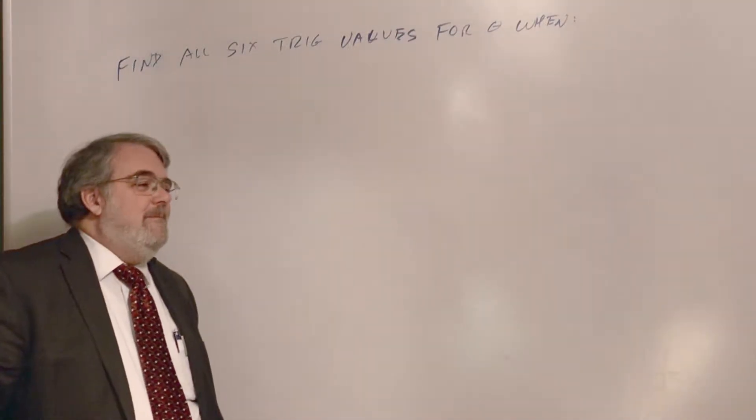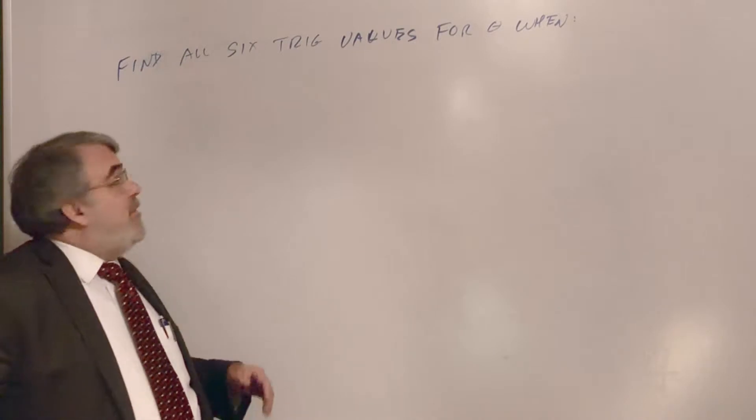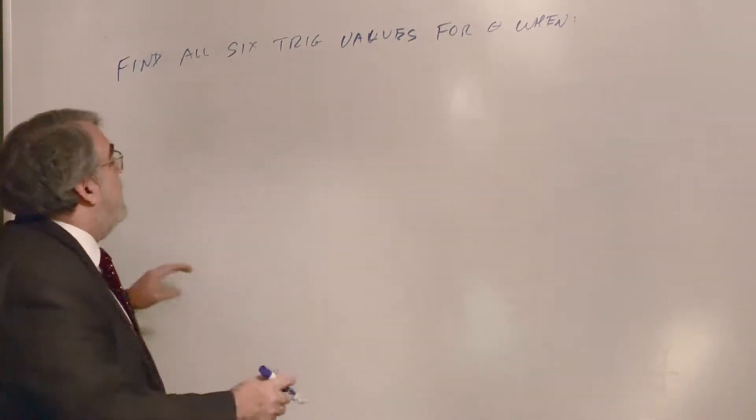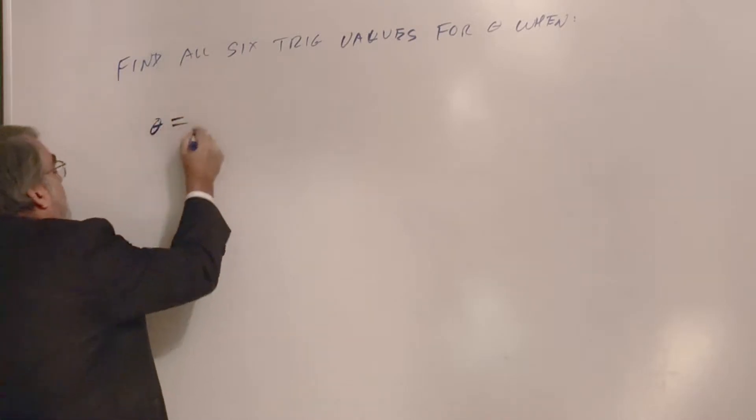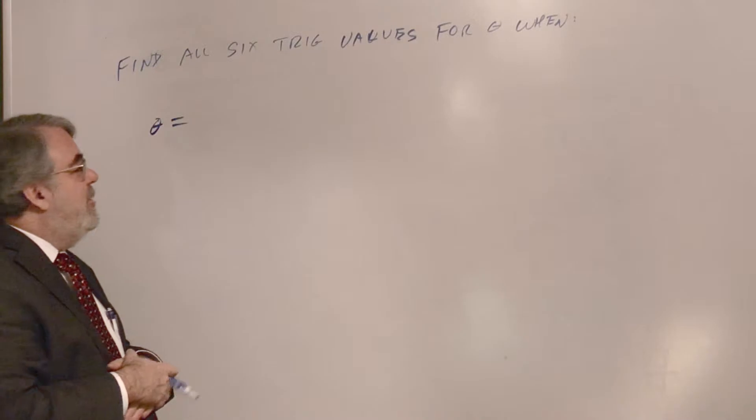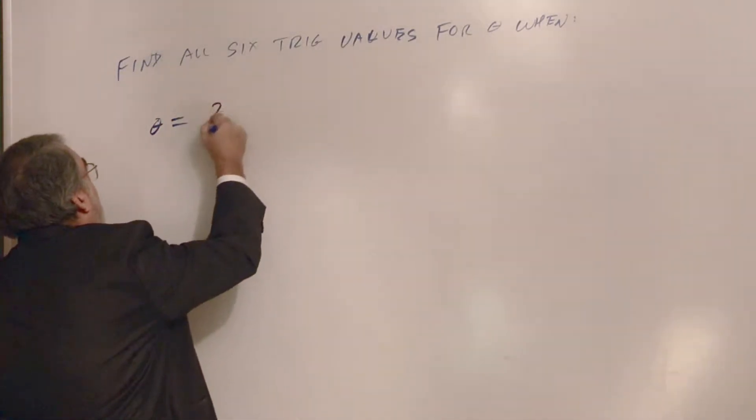I think I can get a number of examples in kind of quickly here, using this strategy. Find all six trig values for theta when theta is equal to, how about 7π over 4?